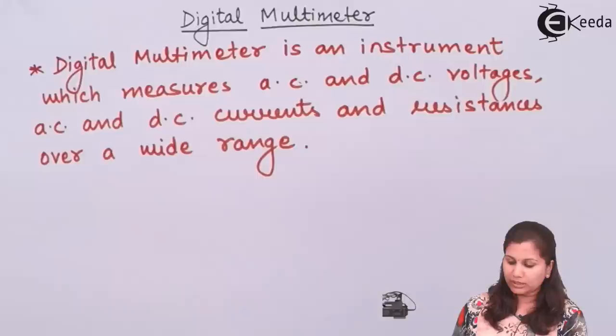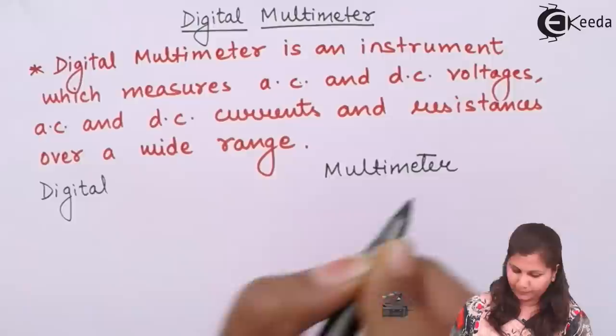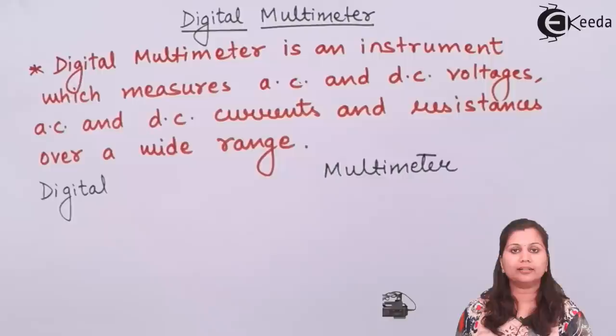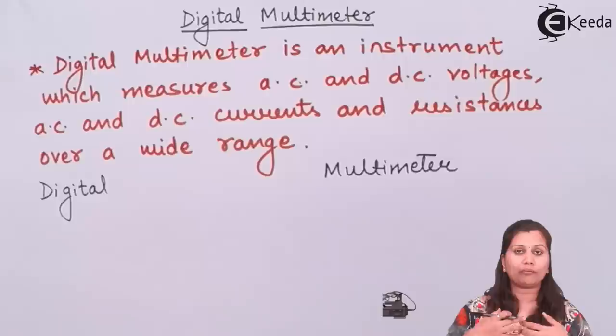The word 'digital multimeter' consists of two terms: digital and multimeter. Digital means that this instrument is going to give us the output in a digital form — in the form of numbers it is going to display the output. Whereas 'multimeter' means that it is a metering device which measures something, and 'multi' means it can be used for various types of measurements.